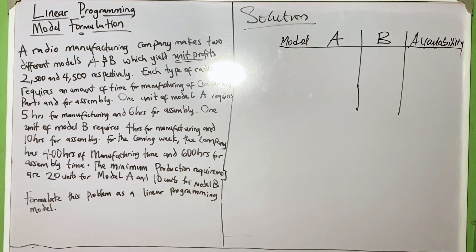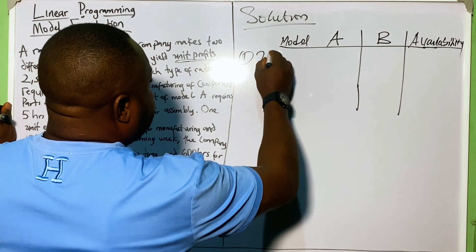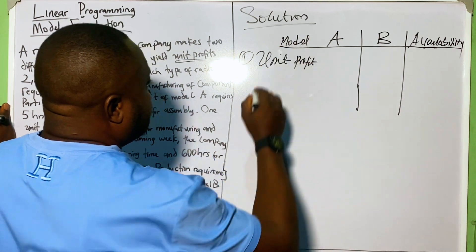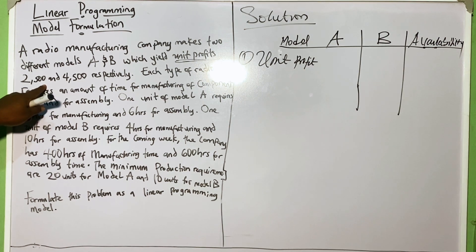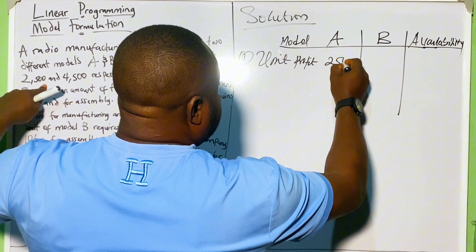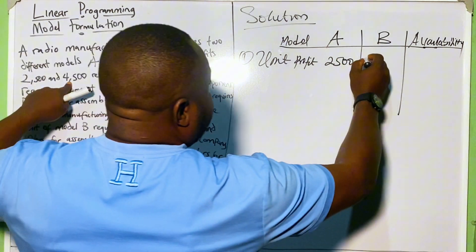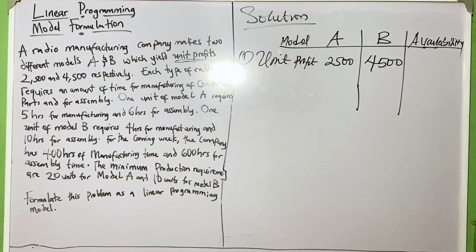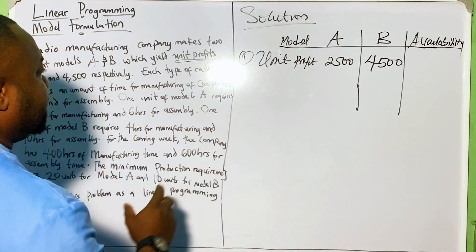The next item to bring out is the unit profit. For model A it is 2,500 Naira, and for model B it is 4,500 Naira. That is going to help us build our objective function.